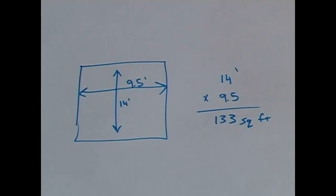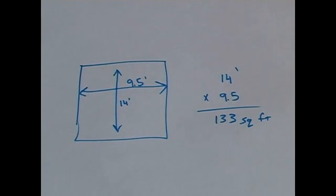If I plug in my values and take my length of 14 feet times my width of nine and a half feet, I get a total of 133 square feet.